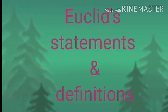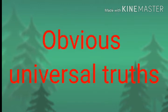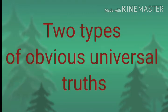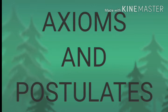These are some of the definitions and statements by Euclid. Starting with his definitions, Euclid assumed certain properties which were not to be proved. These assumptions are actually obvious universal truths. He divided them into two types: axioms and postulates.